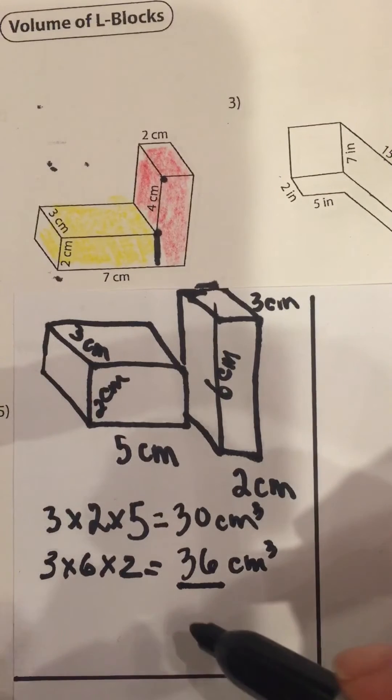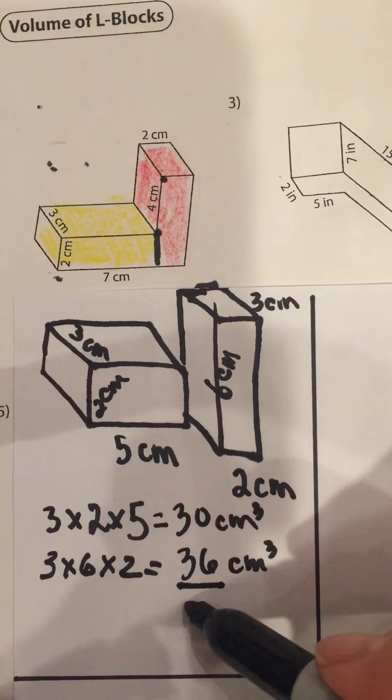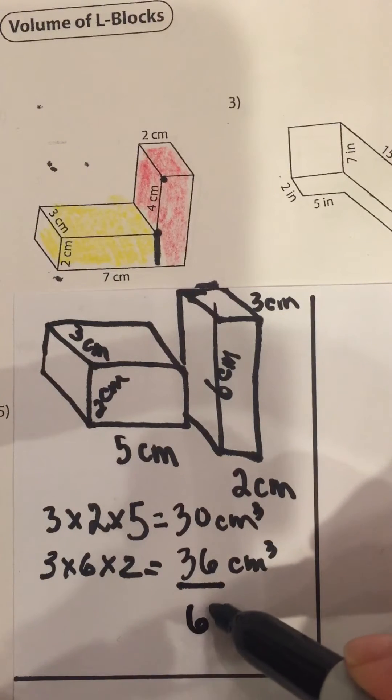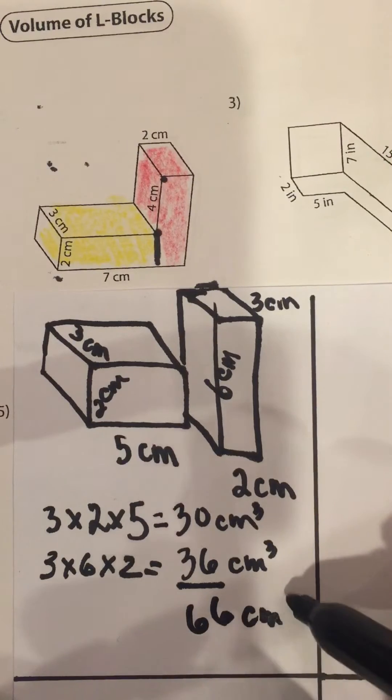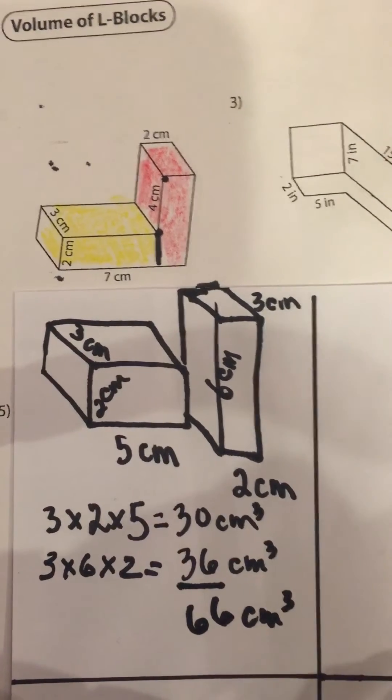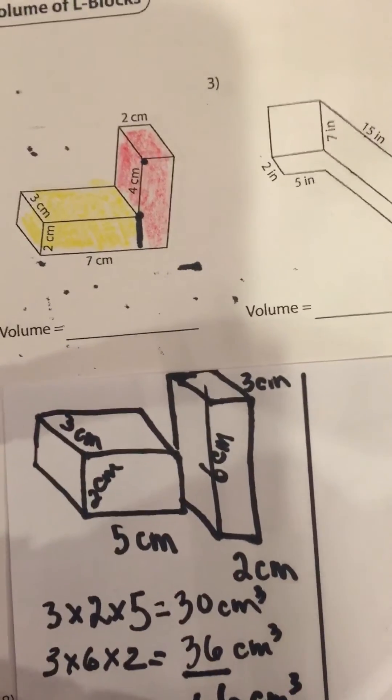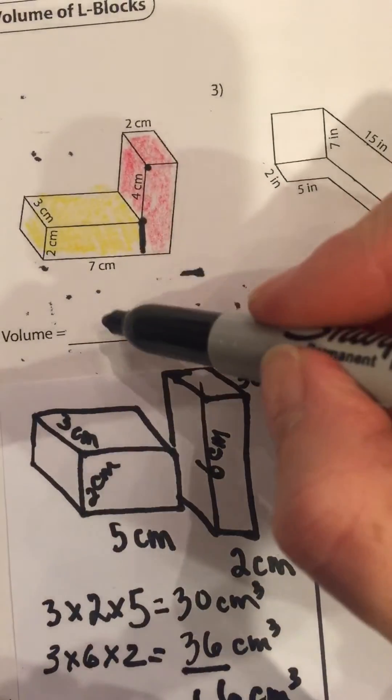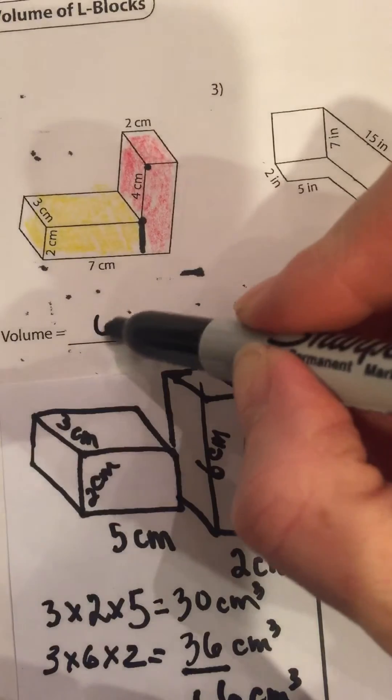So let's add that up. 30 plus 36 is 66 cubic centimeters. Okay, let's fill that in on our volume line right here.